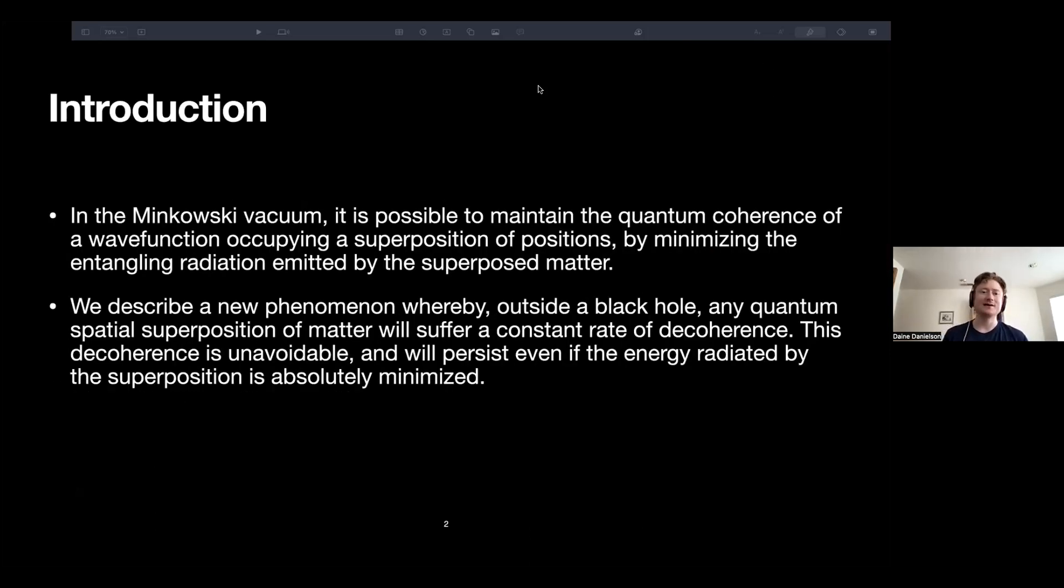So just to begin, I want to introduce some familiar facts that in the Minkowski vacuum, it is possible to maintain the quantum coherence of a wavefunction occupying a superposition of different positions by minimizing entangling radiation emitted by the superposed matter. So I'm assuming that this wavefunction carries some charge, so it is possible for it to radiate. And if you want to avoid decohering this superposition, you should avoid producing radiation from the superposition.